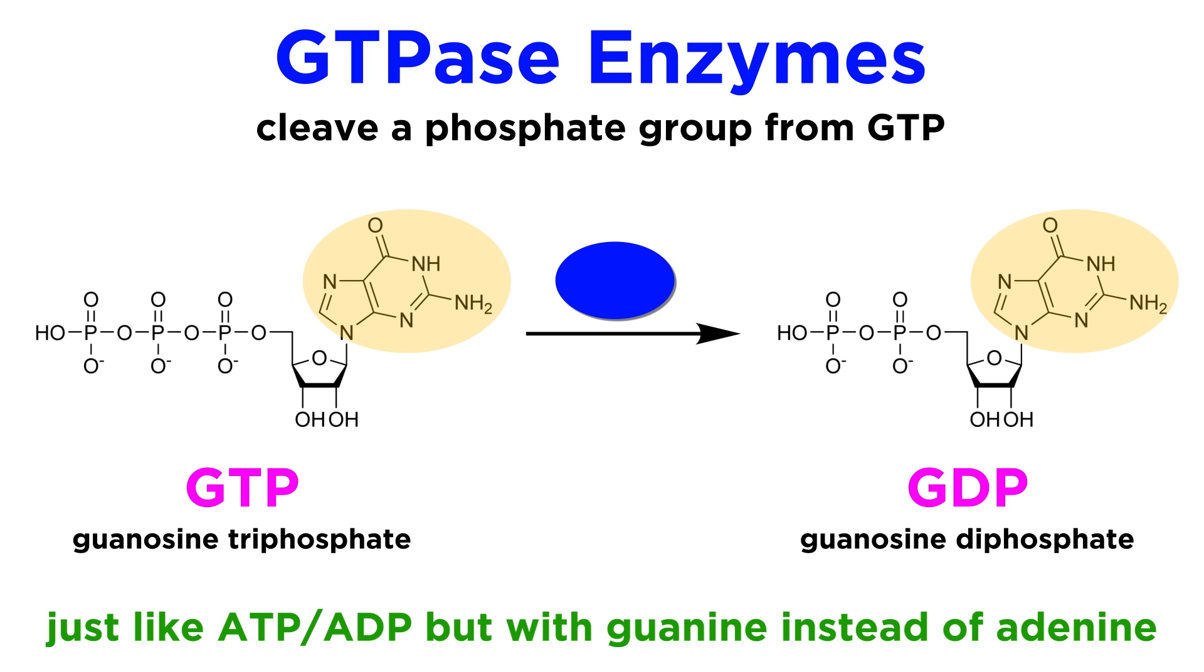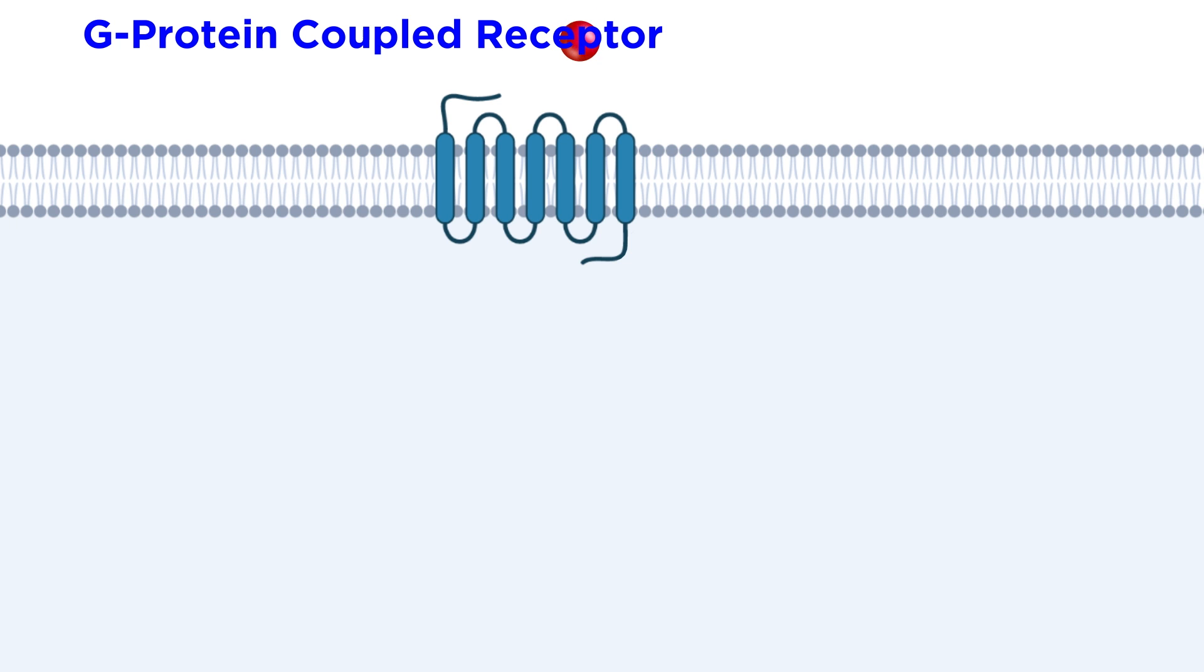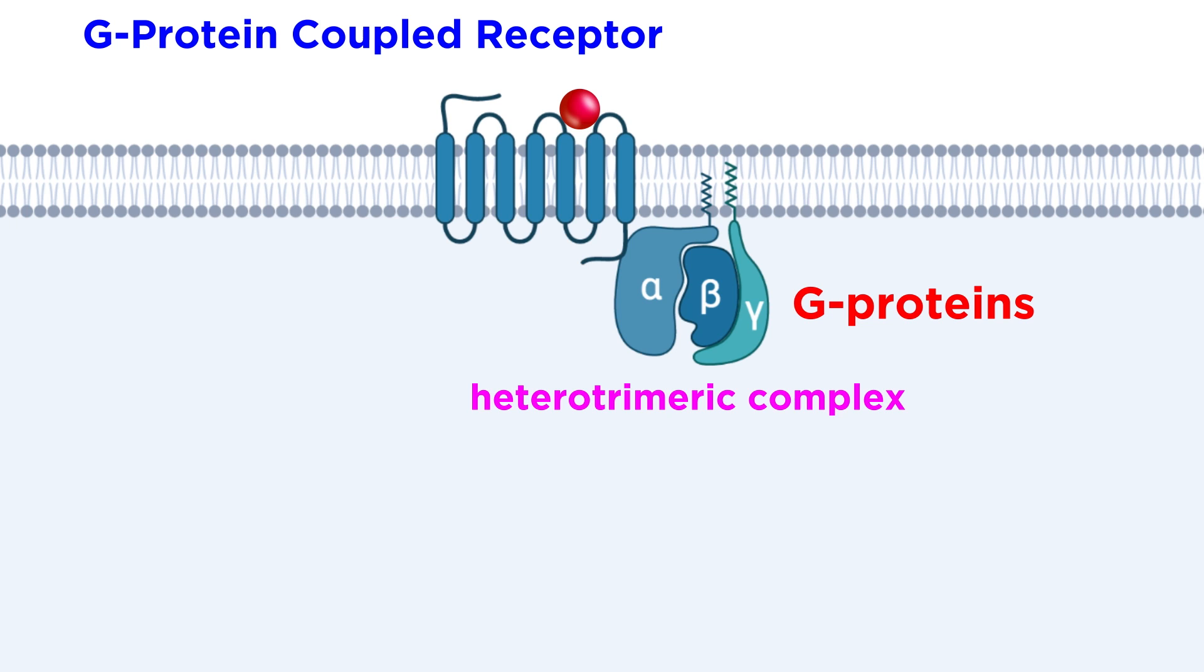When a G protein-coupled receptor binds its ligand, a heterotrimeric complex of G proteins binds to the receptor, where heterotrimeric means comprised of three subunits, at least one of which differs from the other two.